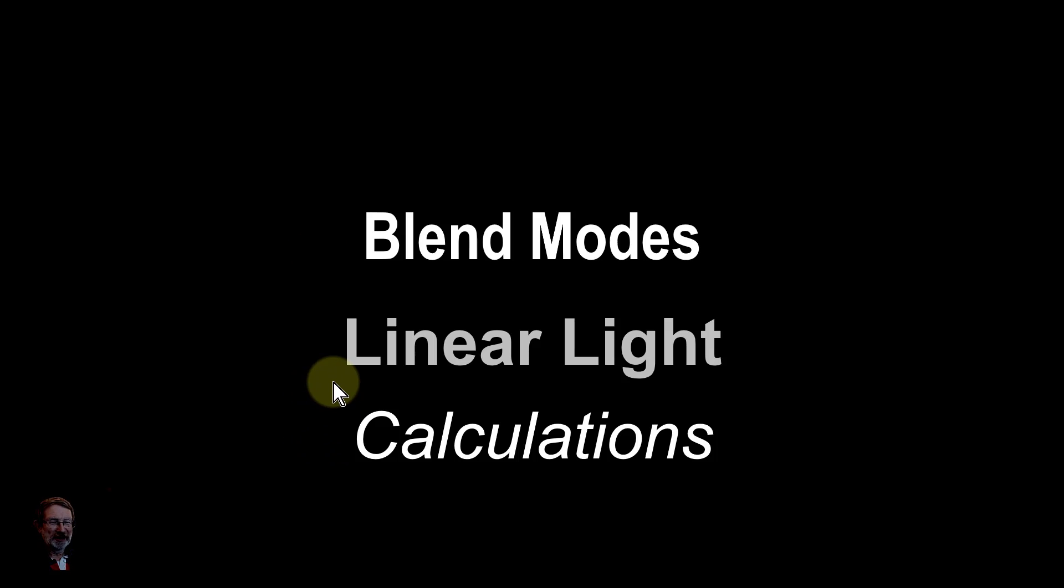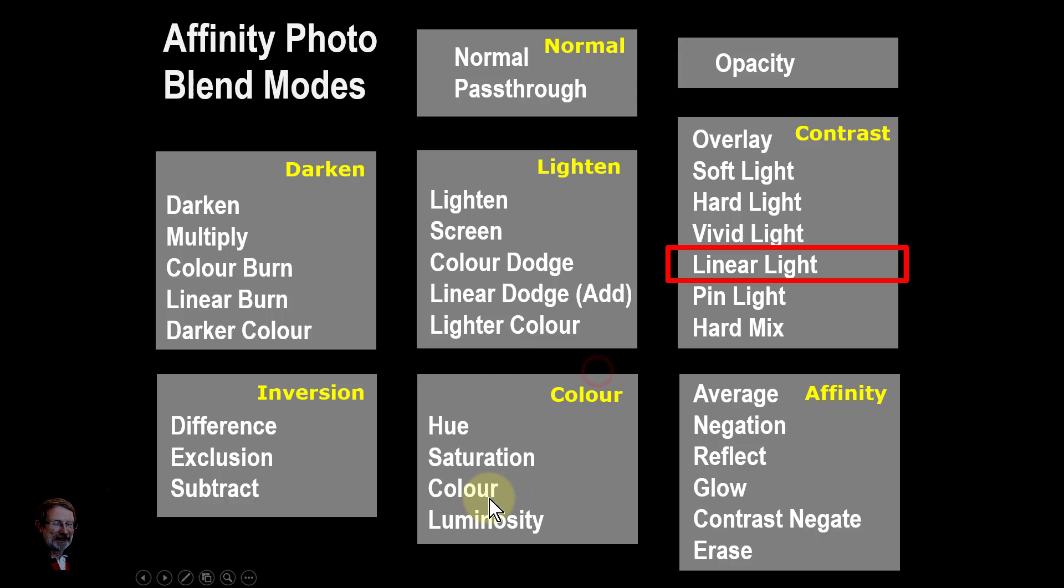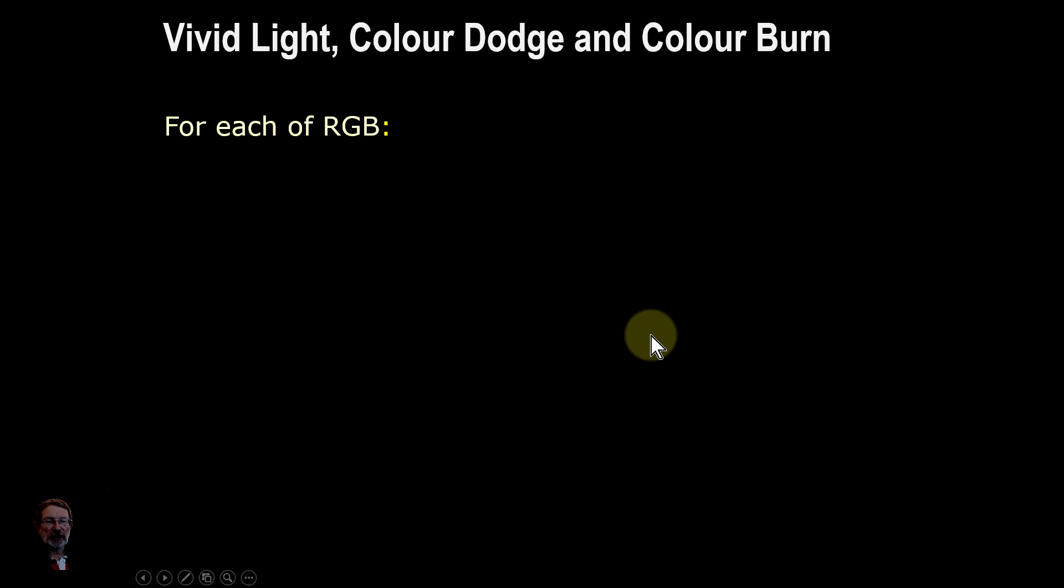And that just leaves the two of us. So the contrast blend group, Linear Light is the fifth member, and it makes use of Linear Burn and Linear Dodge, also called Add, which is a clue as to how it's calculated.